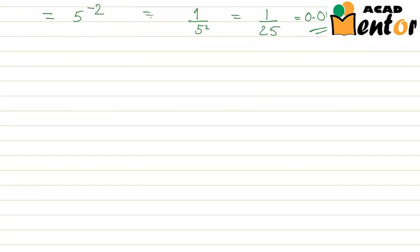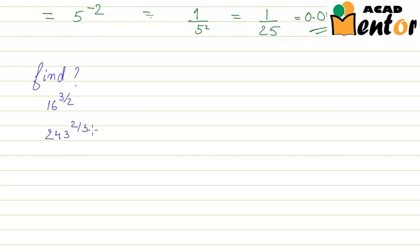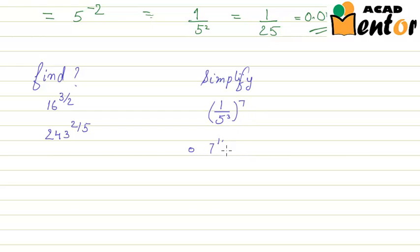I hope you understand these concepts better now. I will give you a few problems to solve for yourself. Find the values of 16 to the power 3 by 2 and 243 to the power 2 by 5. Also simplify: 1 by 5 cube, whole to the power 7, and 7 to the power 1 by 2 multiplied by 5 to the power 1 by 2.